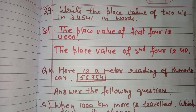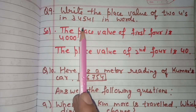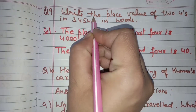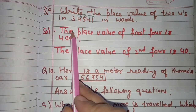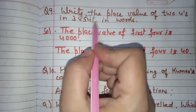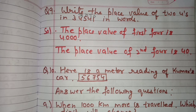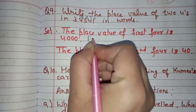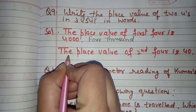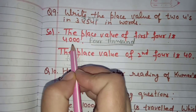Question number 9: write the place value of two fours in 34,541 in words. In this number we have two fours. Ones, tens, hundreds, thousands — the place value of the first four is four thousands, so we write 4,000. The place value of the second four is four tens, which is forty. In words: the place value of the first four is four thousand, and the place value of the second four is forty.